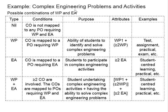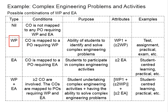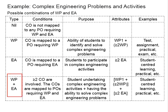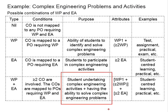Knowing this concept, let us look at the purposes under different combinations. WP is focusing on the ability of students to identify and solve complex engineering problems, while EA is about students participating in complex engineering activities. When you have both coming together, you will see students undertaking complex engineering activities and having the ability to solve complex engineering problems.